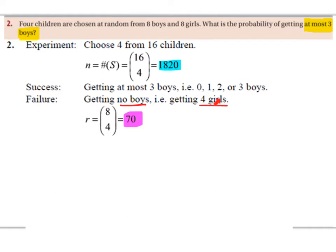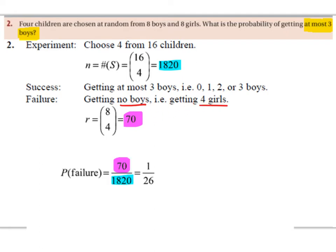The probability of getting four girls — what we need to do is 8 choose 4. Remember there are eight girls to choose from; there are 16 children altogether, but only eight of them are girls. So it's going to be 8 choose 4, which is 70. This is the event of choosing four girls. So the probability of failure is going to be 70 divided by 1820, which simplifies to one over 26.